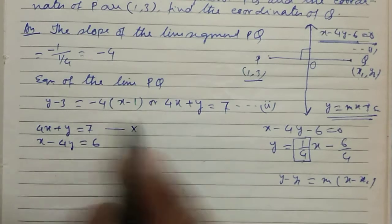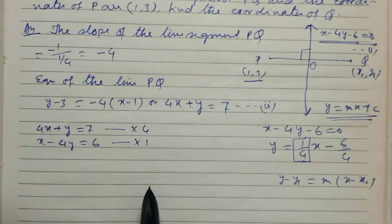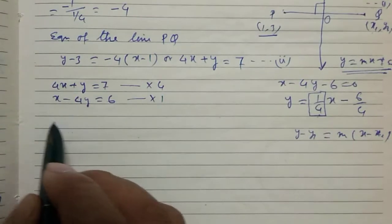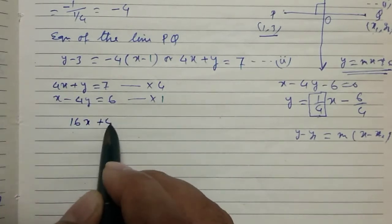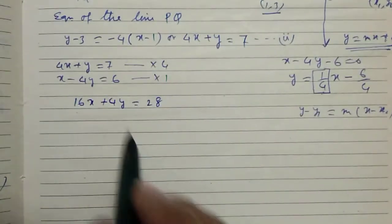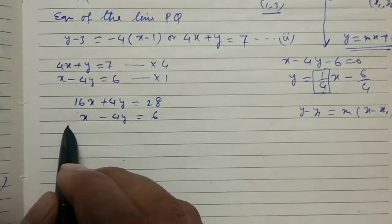We multiply this by 4 and this by 1. 16x plus 4y equals 28. x minus 4y equals 6.